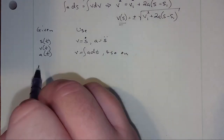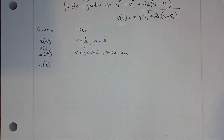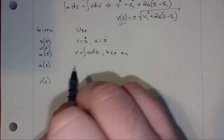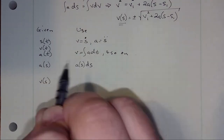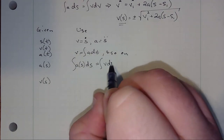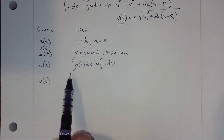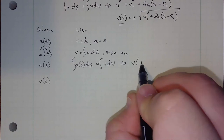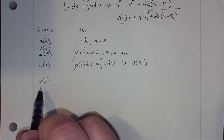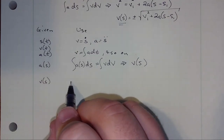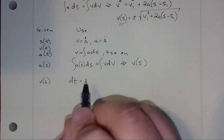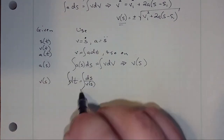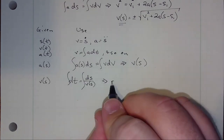We noted earlier that we have a situation where we can use acceleration as a function of position and velocity as a function of position. We'll explicitly write the integral of a(s) ds equals the integral of v dv. Performing this integral, we'll have s on the left-hand side, giving us v as a function of s. If I have v(s), then I can write dt equals ds over v, rearranging one of those definitions, and integrate both sides. That will allow us to get, after some algebra, s as a function of t.